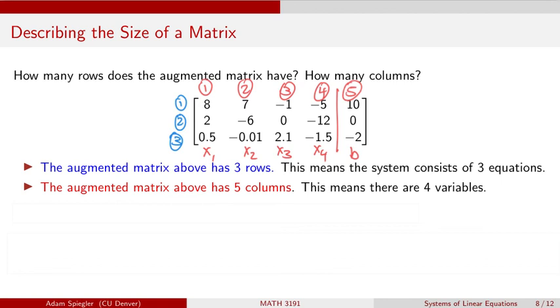We've got three rows and five columns. So we would say that this augmented matrix is three by five. We read this as three by five, even though we have the multiplication symbol in here.